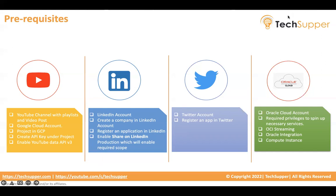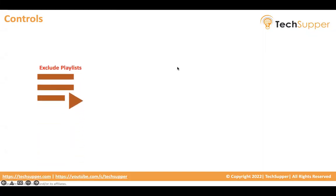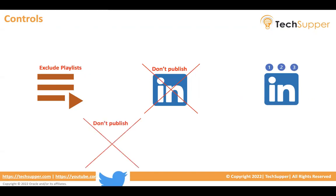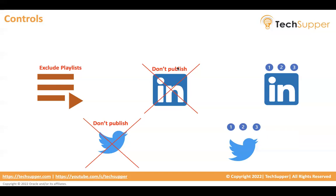I also have various control features. You may have multiple playlists in your YouTube channel but not want to use all of them — so you can exclude specific playlists. If you don't want to publish posts on LinkedIn for a certain time, you can turn the flag off and videos will not be published on LinkedIn. You can also control how many videos you want to post on LinkedIn — one, two, three, etc. Similarly, you can stop posting to Twitter and control how many videos to publish on Twitter. These are the various controls available in this complete architecture.